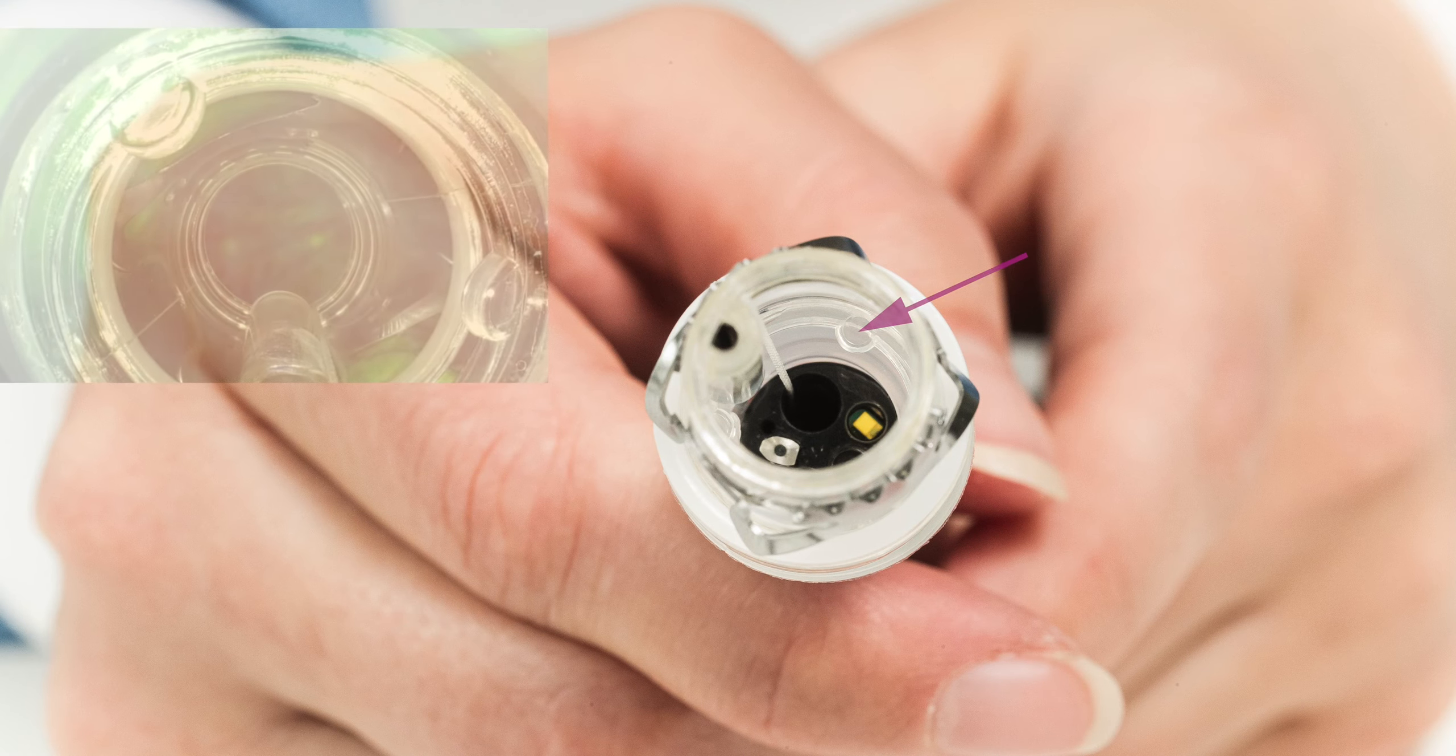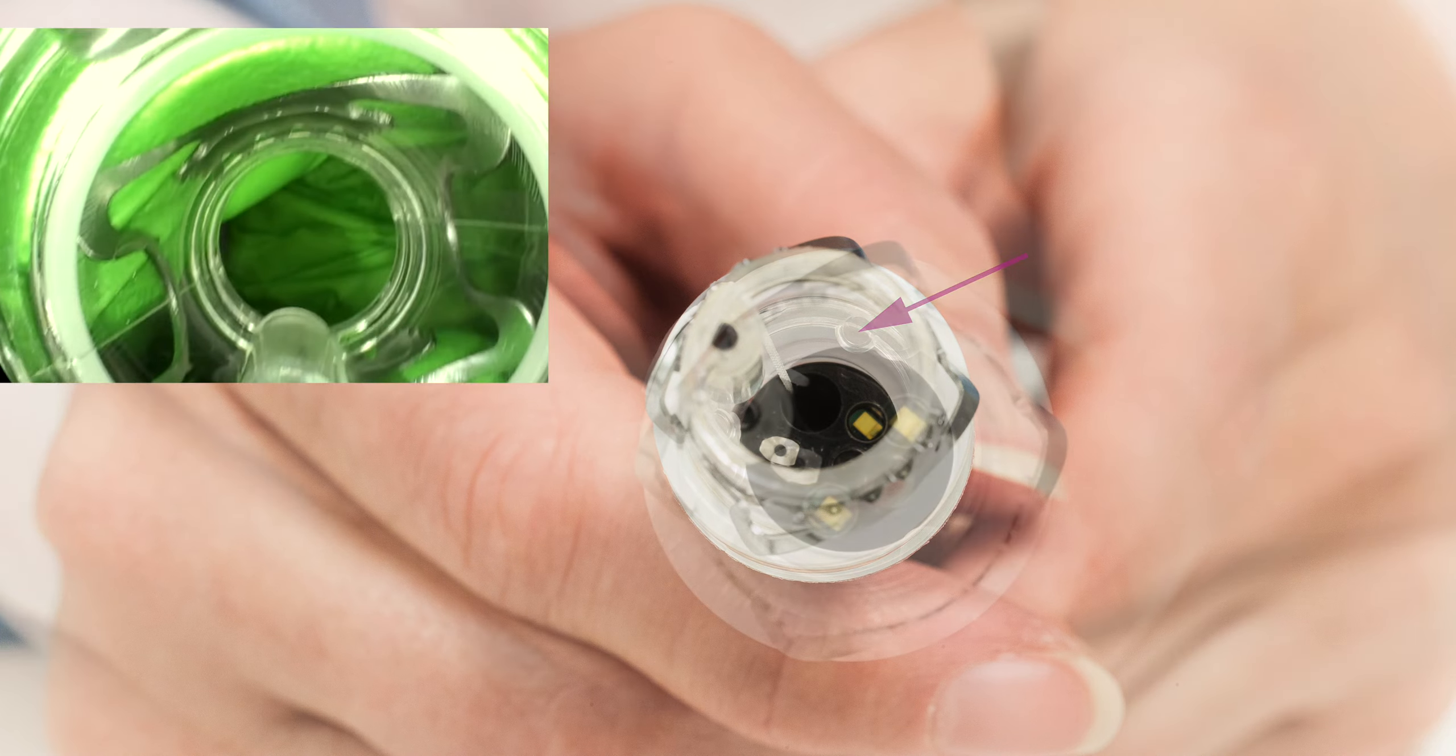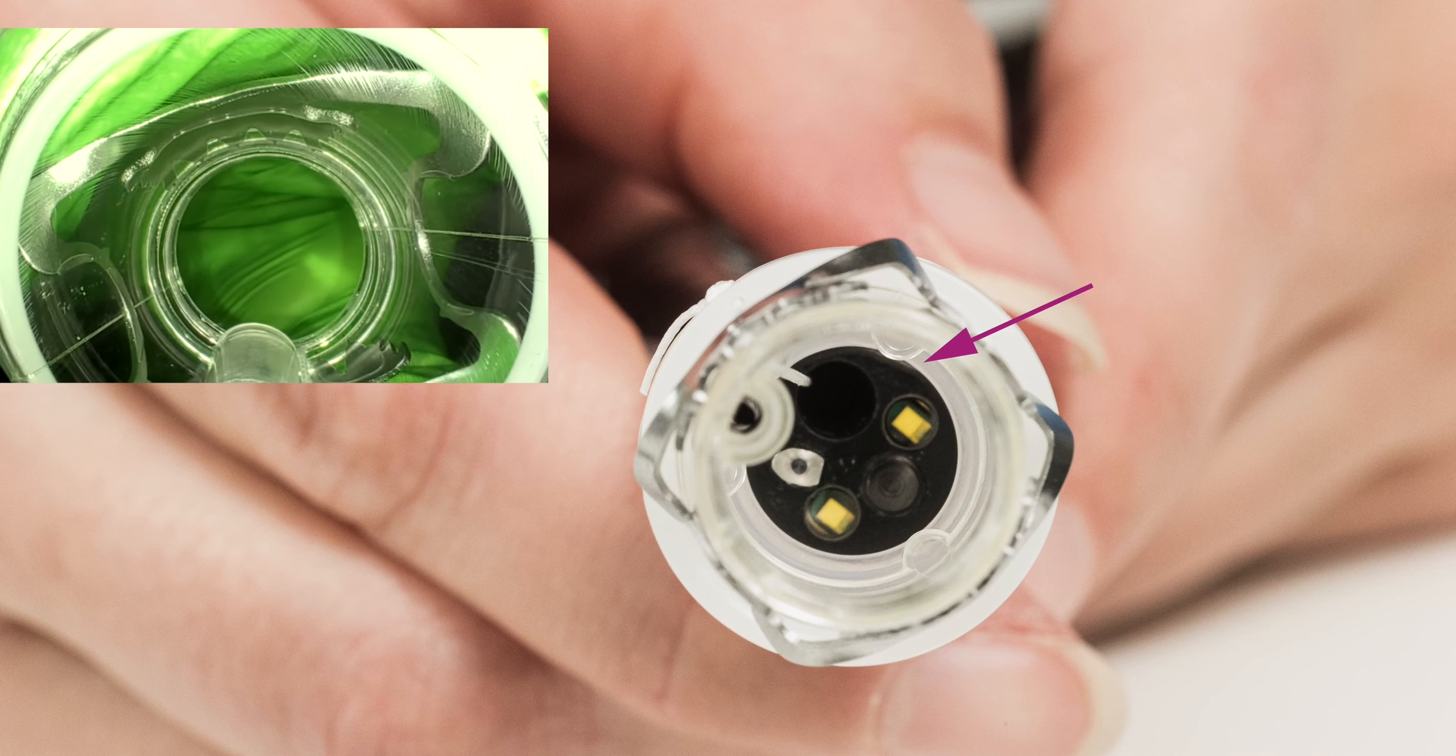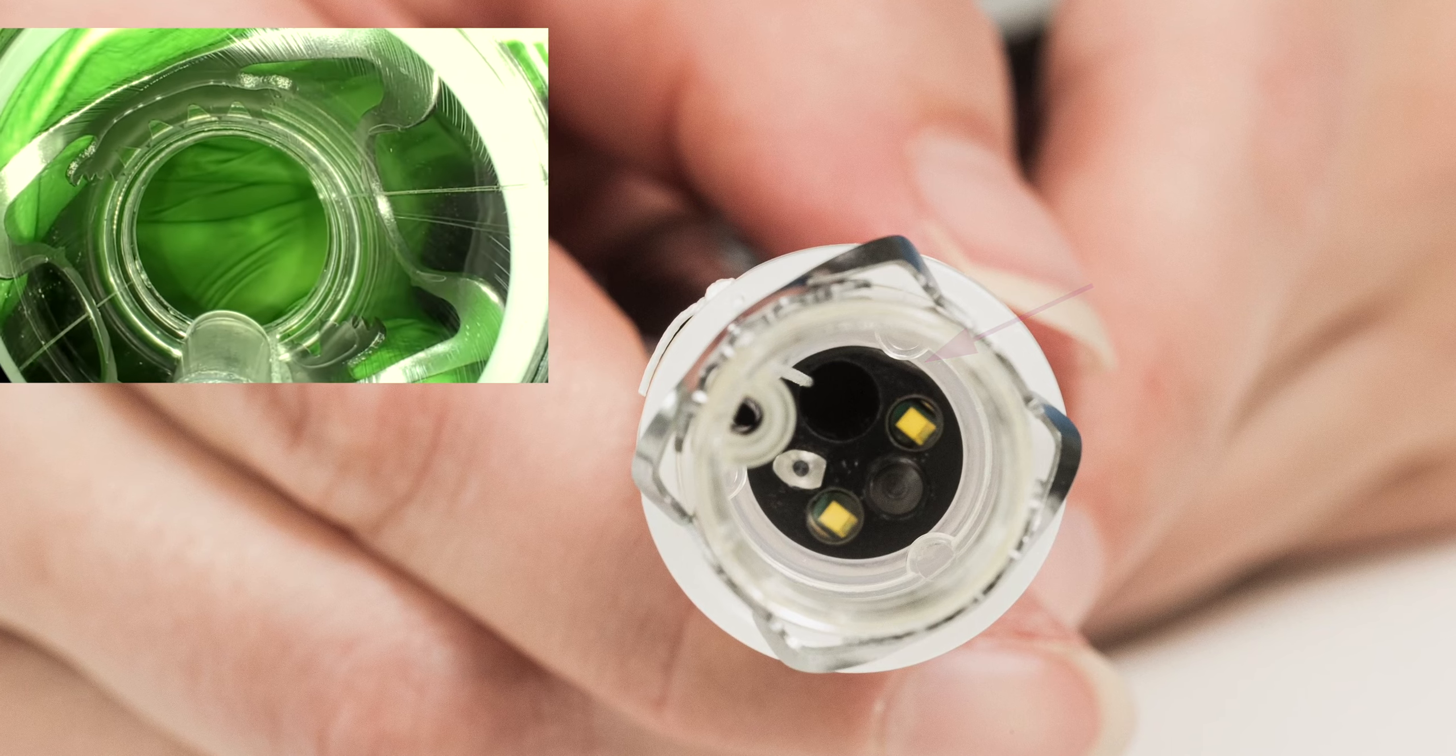The cap must be pushed onto the endoscope until the endoscope tip abuts against the endoscope stoppers in the cap and are no longer to be seen in the endoscopic image.